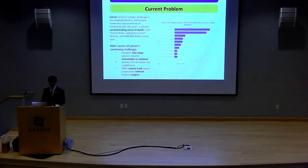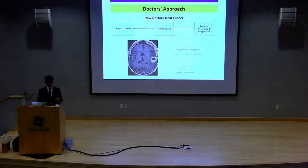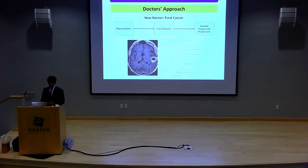And there are three main causes to this that doctors have identified. The first is that complex late-stage cancers often become untreatable or resistant by the time they reach that stage. And the problem with that is at least 25% of cancer is not caught early at all. And oftentimes the cancers that are caught early are impossible to treat without extremely invasive surgery, for example glioblastomas in the brain, which might be inoperable at all.